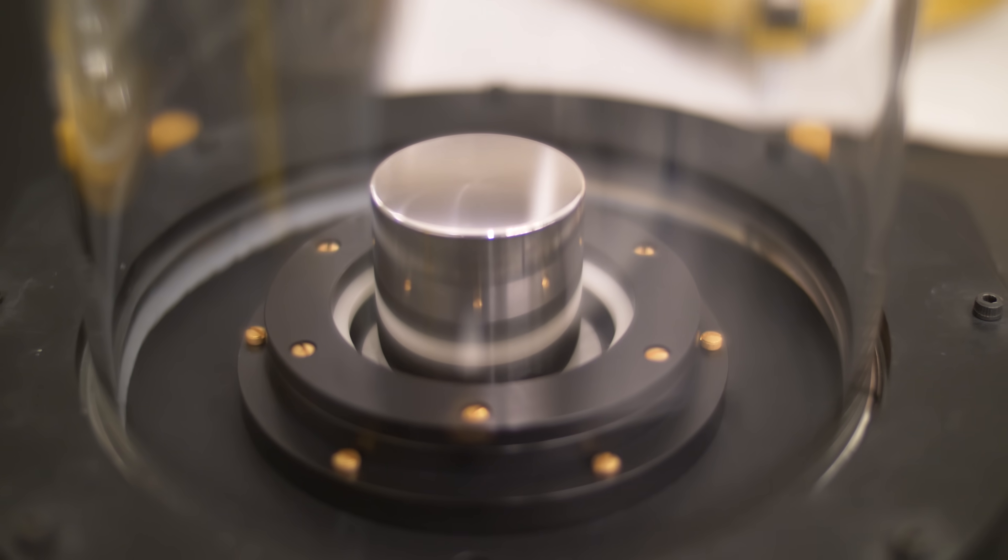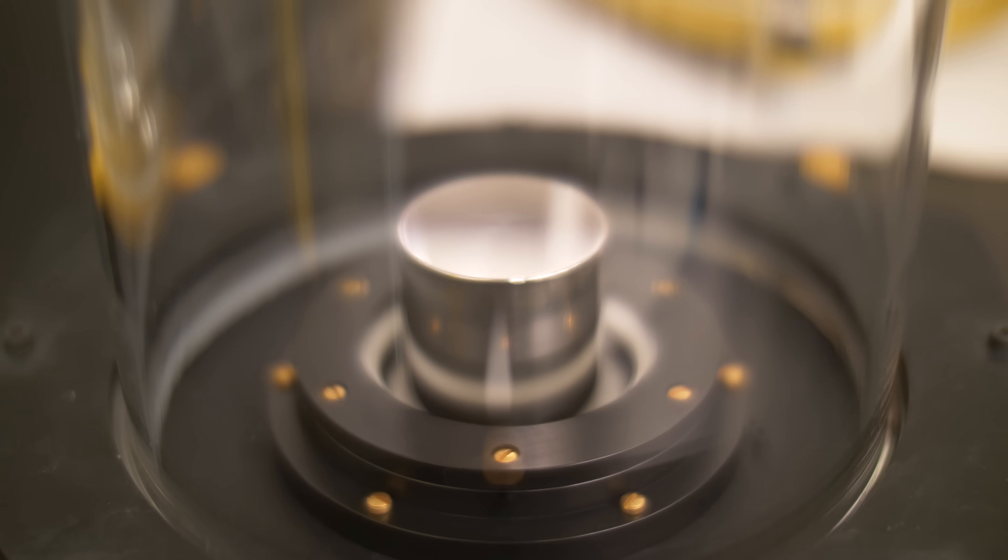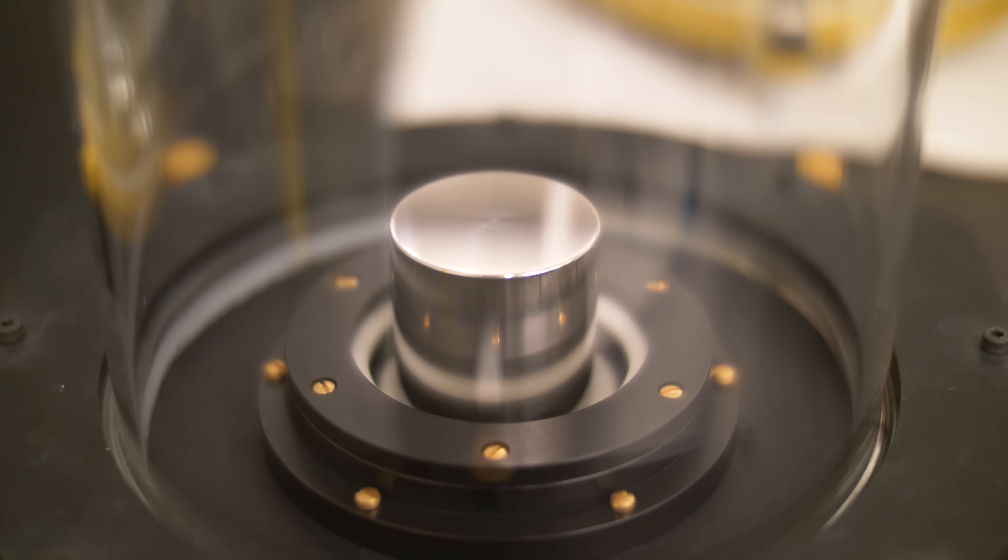But it was unacceptable to have mass standards with changing masses. So the solution was to eliminate the kilogram's dependence on a physical object and instead define it based on a constant of nature, Planck's constant.